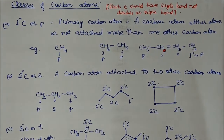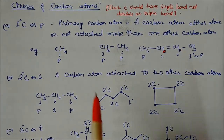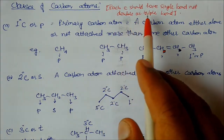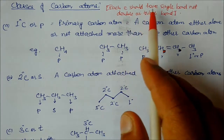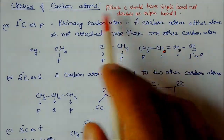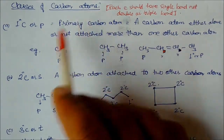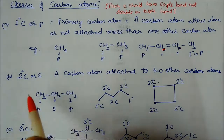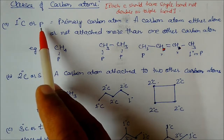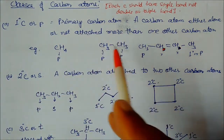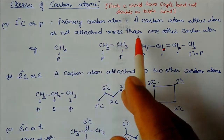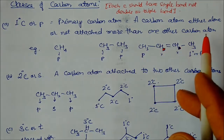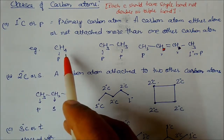Now we will look at the classes of carbon atoms. For classification purposes, each carbon should have only single bonds, not double or triple bonds. We can have different types: primary carbon, secondary carbon, tertiary carbon, and quaternary carbon. Primary carbon, represented as 1° or small p, is a carbon atom that is either alone or attached to not more than one other carbon atom.